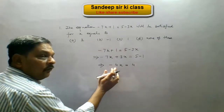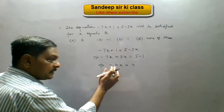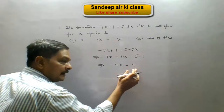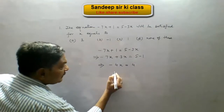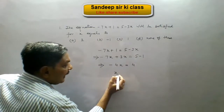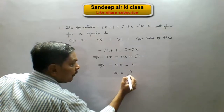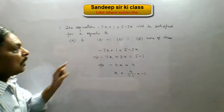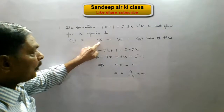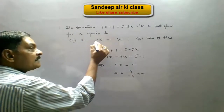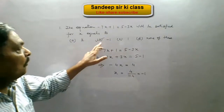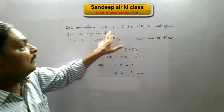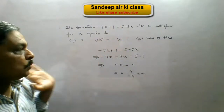So this implies minus 4x equals 4. When we go for cross multiplication, this minus 4 goes to the right hand side in the denominator. We get x equals 4 upon minus 4, which is minus 1. So our option B here is correct.